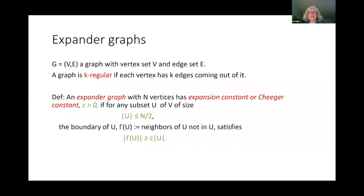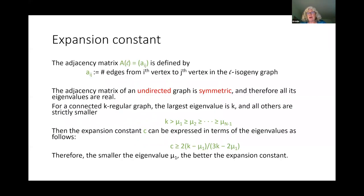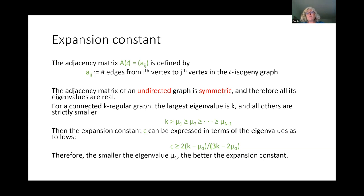This expansion constant is important because now I'd like to talk about the adjacency matrix for a graph. The adjacency matrix has the (i,j)-th entry equal to the number of edges from the i-th vertex to the j-th vertex. In the L-isogeny graph, we'll call this matrix A of L, assuming P is fixed. If the graph is undirected, this matrix is symmetric because you have the same number of edges going from i to j as from j to i. For a symmetric adjacency matrix, all eigenvalues are real. For a connected K-regular graph, the largest eigenvalue is K and all others are strictly smaller.